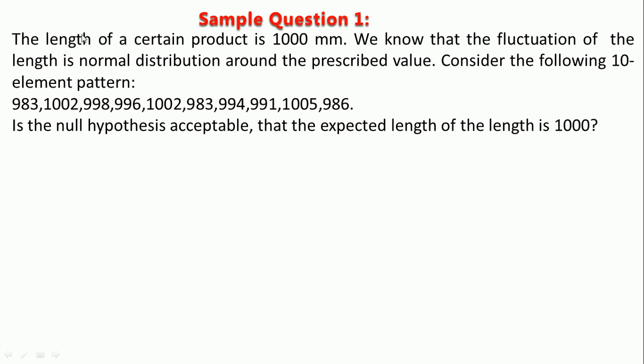The length of a certain product is 1000 millimeters. We know that the fluctuation of the length is normal distribution around the prescribed value. Here is a giveaway telling you that you need to use one of the parametric tests.